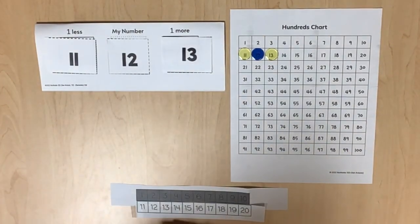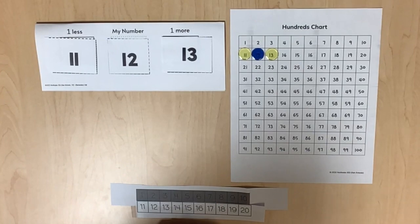When students are generating numbers that are one less, do not select zero as the given number. However, 20 may be the given number.